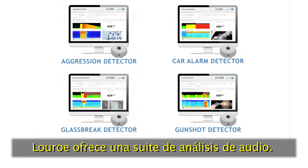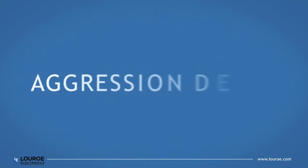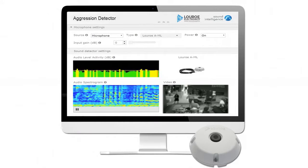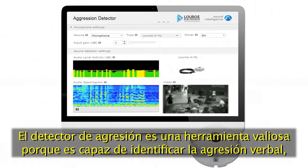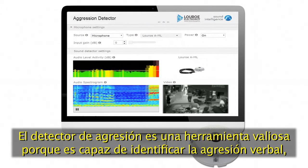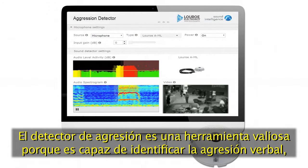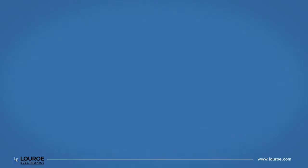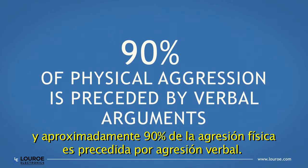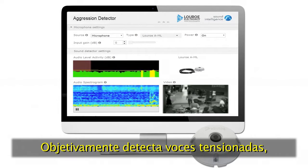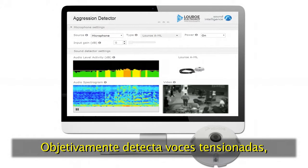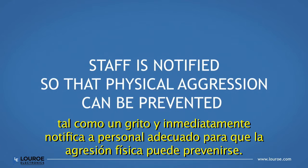LuRo offers a suite of audio analytics. The Aggression Detector is a valuable deterrence tool because it is able to identify verbal aggression, and 90% of physical aggression is preceded by verbal arguments. Stressed voices such as shouting and yelling are objectively detected. Staff is immediately notified so that physical aggression can be prevented.